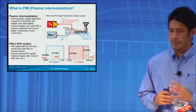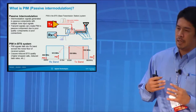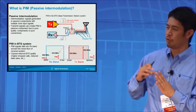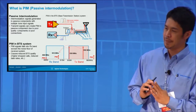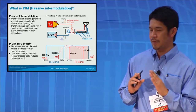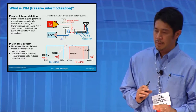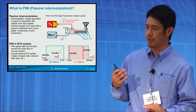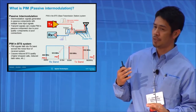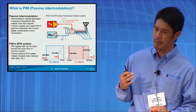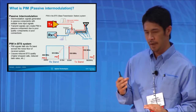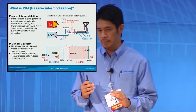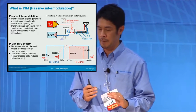It is difficult to measure passive intermodulation in a normal case because passive intermodulation is very small. But if you put high power — like 20 watts or 43 dBm — to the passive device, you can actually measure PIM, and it is a problem.